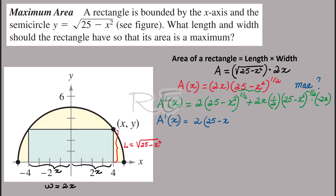We're going to simplify A prime of x. 2x times one-half simplifies by 2, and x times negative 2x becomes negative 2x squared. We kick the negative exponent to the denominator, giving us negative 2x squared divided by (25 minus x squared) to the one-half.